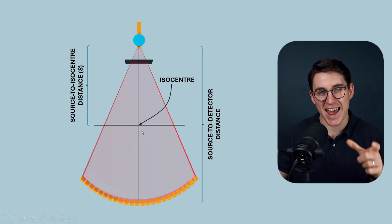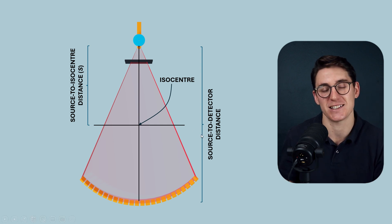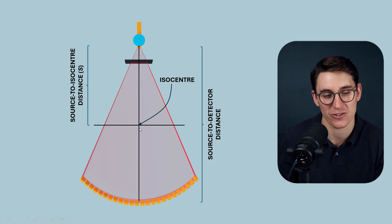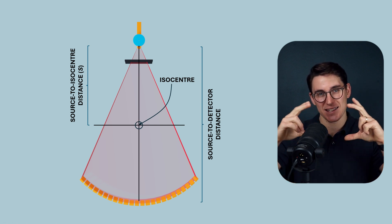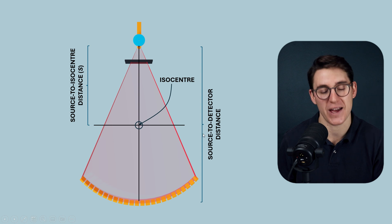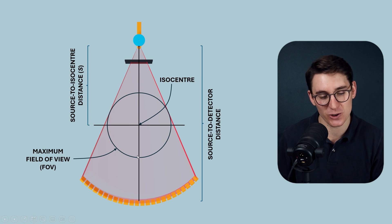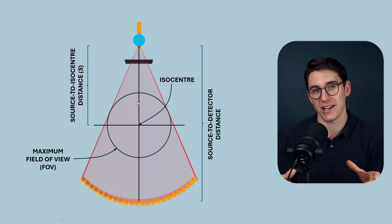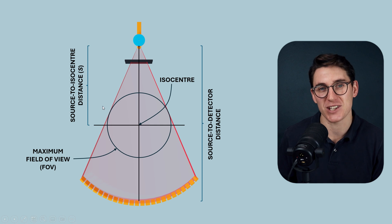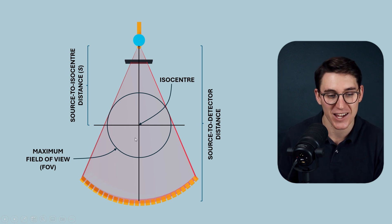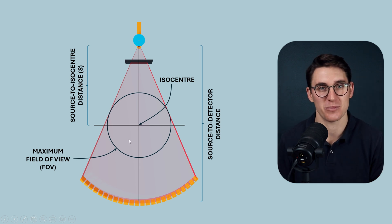Importantly, the isocenter is the axis of rotation for a third generation CT scanner. It's often halfway from the source to detector distance, but it doesn't have to be. If we draw a small circle around the isocenter and expand that circle out until it hits the edge of our fan beam, we create what's known as the maximum field of view — the area in which we can accurately calculate attenuation data. Anything outside this maximum field of view cannot be accurately processed, so our patient needs to sit within it.